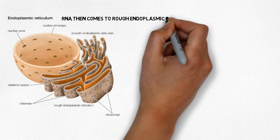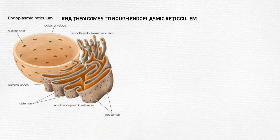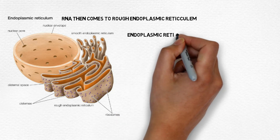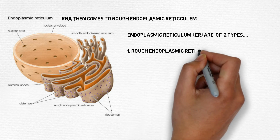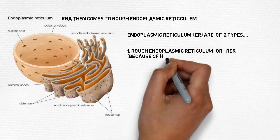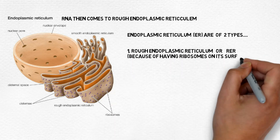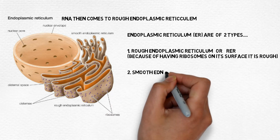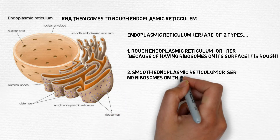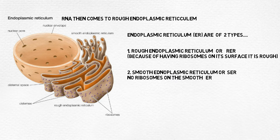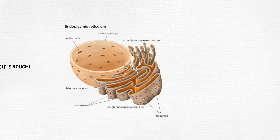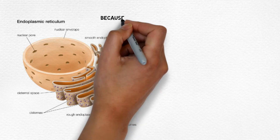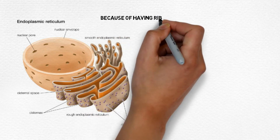Endoplasmic reticulum are of two types: rough endoplasmic reticulum and smooth endoplasmic reticulum. Rough endoplasmic reticulum is known as rough because of having ribosomes on its surface, whereas smooth endoplasmic reticulum doesn't have ribosomes on its surface. Here in this diagram you can see the rough endoplasmic reticulum and the smooth endoplasmic reticulum.